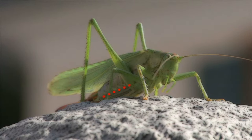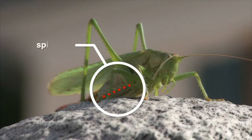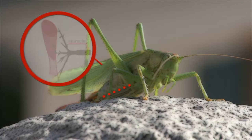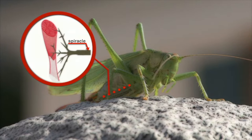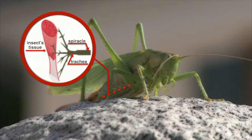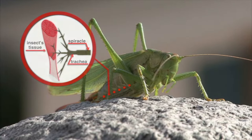Insects, for example, have tiny holes called spiracles along the abdomen. Each spiracle leads to a trachea, a tube-like structure. The tracheal system permeates the body of the insect, and each tracheal tube delivers air directly to the insect's tissues and removes carbon dioxide waste.